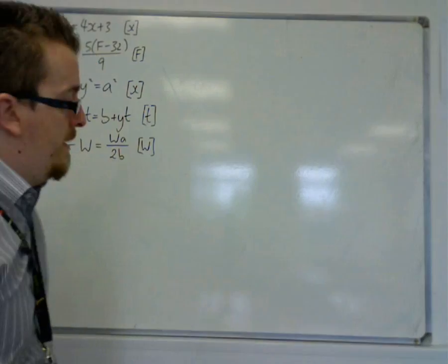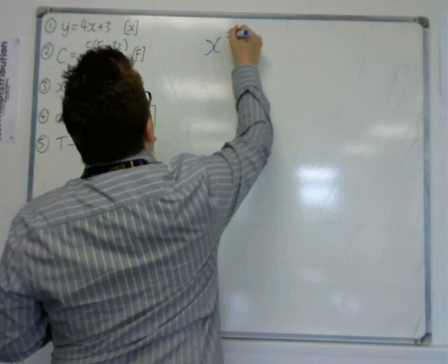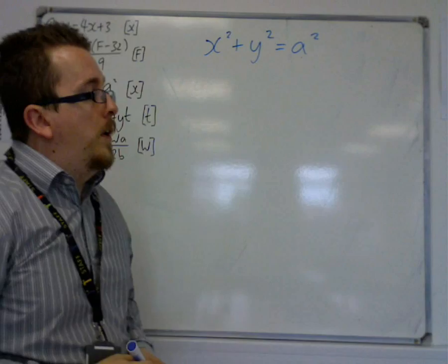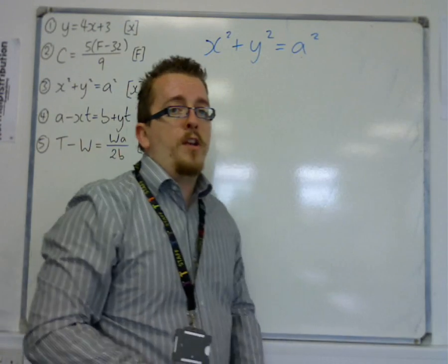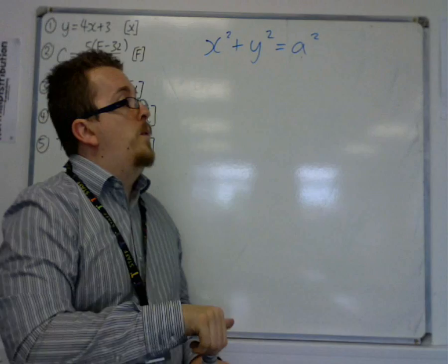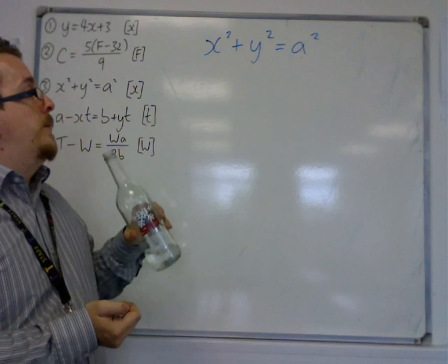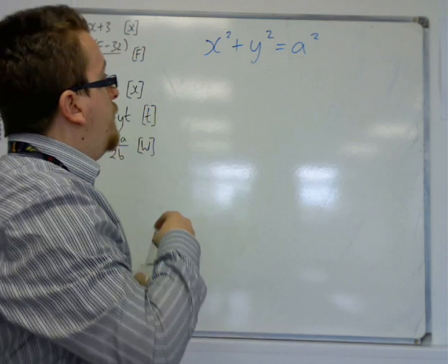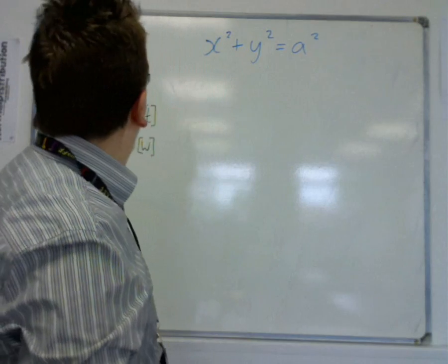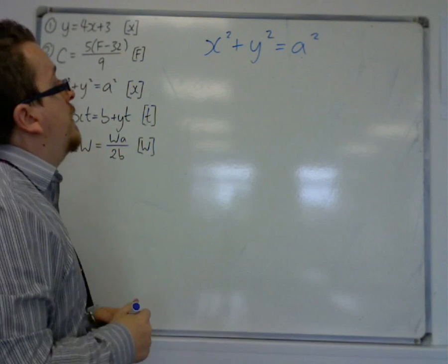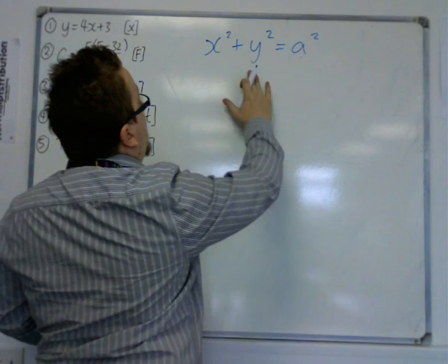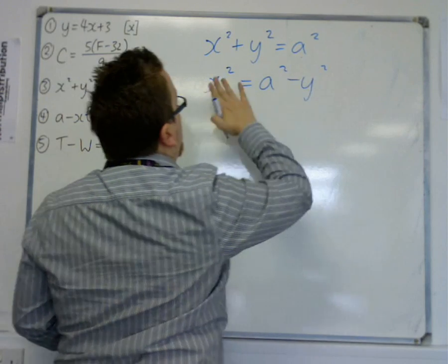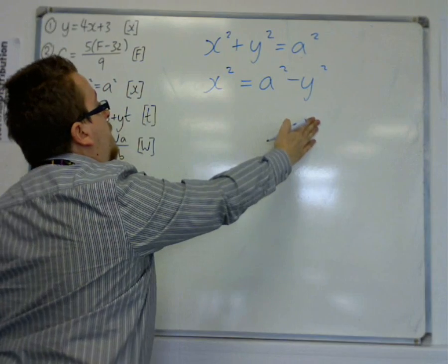Right, what's number 3 then? Number 3, x squared plus y squared equals a squared. So, as it turns out, this is the equation for a circle with radius a, so that's something you'll learn in your first year. Now, in order to get x as the subject, the first step I'm going to do is take y squared from both sides. So that leaves me with x squared is a squared minus y squared.